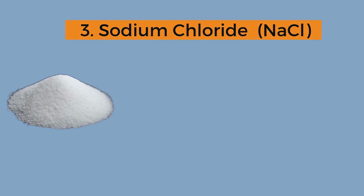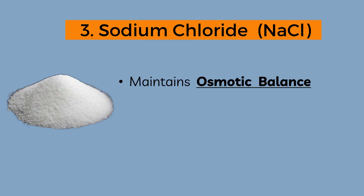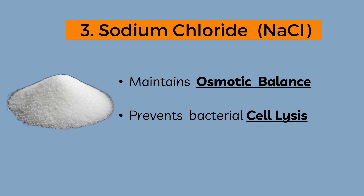The third ingredient in nutrient agar is sodium chloride. The main role of sodium chloride is to maintain osmotic equilibrium. By maintaining osmotic balance, NaCl prevents bacterial cell lysis. Therefore, sodium chloride is very essential in nutrient agar.